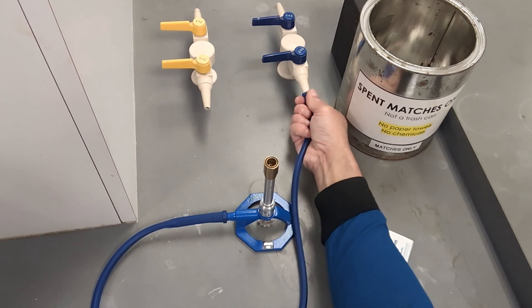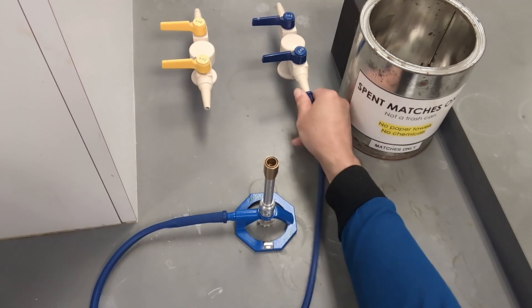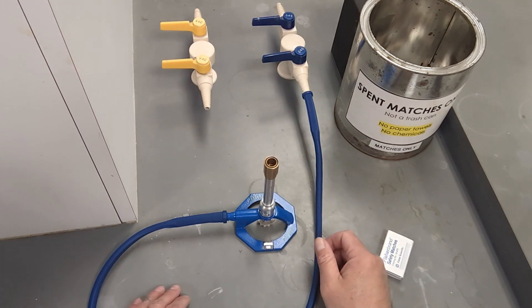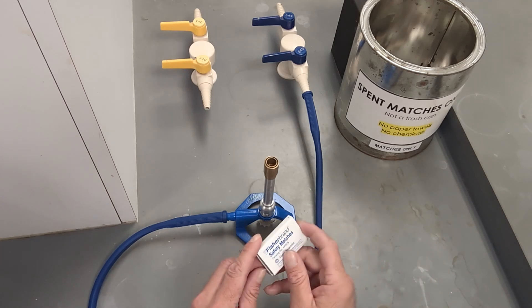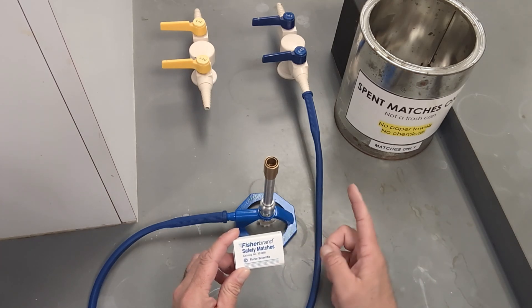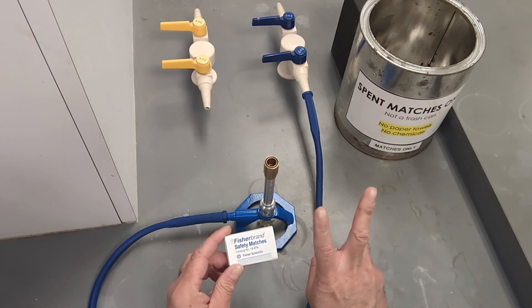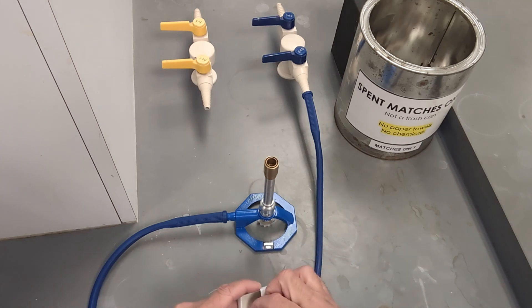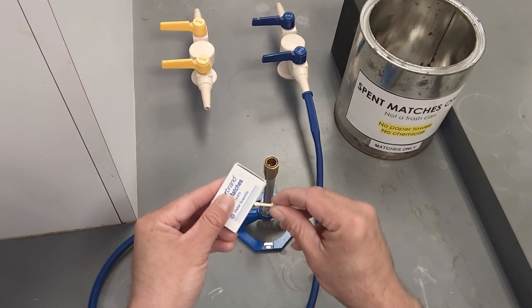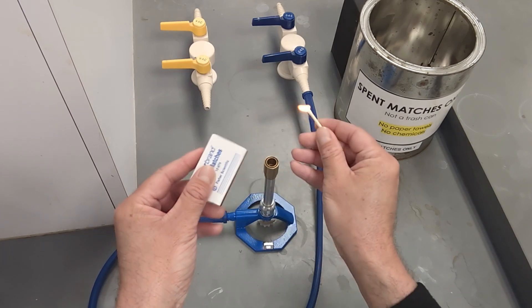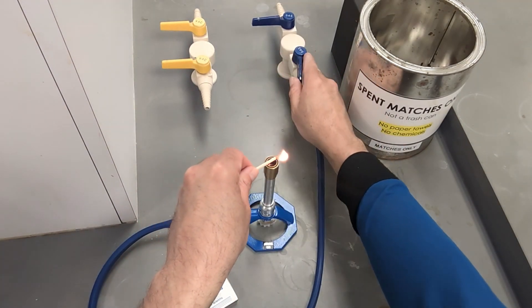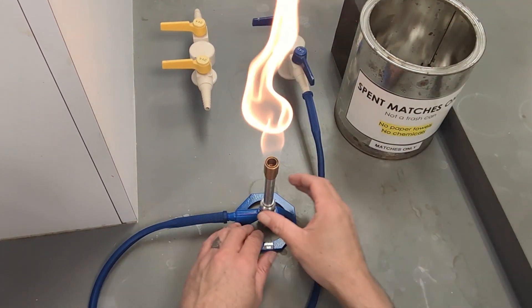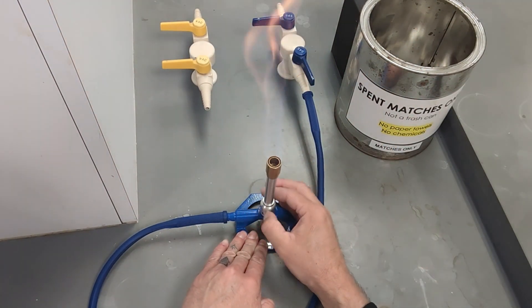And before opening the gas valve we need to be sure that our match is lit. So the first thing we are going to do is open our match box, and then after that we are going to open the valve. And be sure to extinguish your match and dump it into the spent matches.